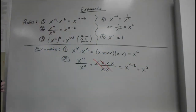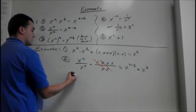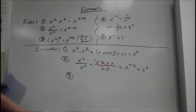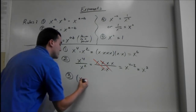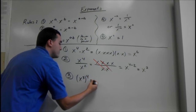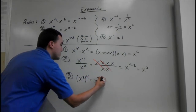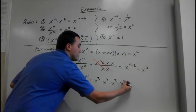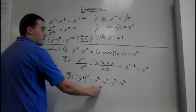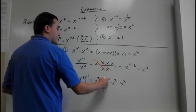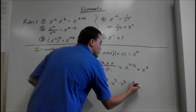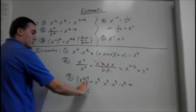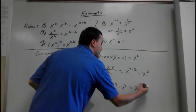So we have x cubed to the fourth power, which means x cubed times x cubed times x cubed times x cubed. Since we're multiplying these, we can just add the exponents: 3 plus 3 plus 3 plus 3 is 12. A better way of thinking about it is just multiply the two exponents, and we get x to the 12th.